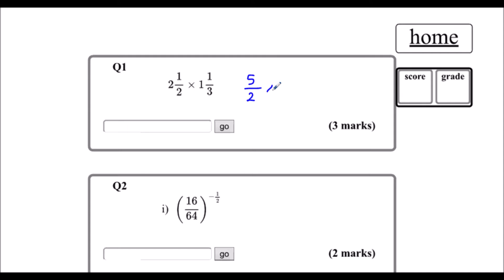And for the second fraction, this time we're in thirds, so 1 whole one is 3 thirds. 3 thirds and 1 third makes 4 thirds. So now we just need to multiply the fractions. To multiply fractions, we times the top times the bottom. 5 times 4 is 20, and 2 times 3 is 6.